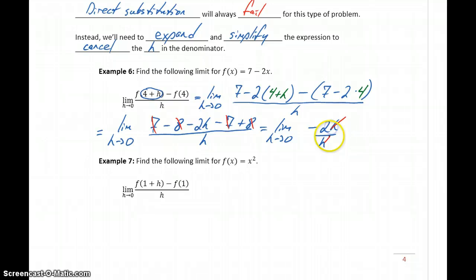So we get the limit as h approaches 0 of negative 2h over h, which will then let us cancel that h in the denominator, leaving us with the limit as h approaches 0 of negative 2. The limit of a constant is always just that constant. So the limit of our difference quotient in this case is negative 2.